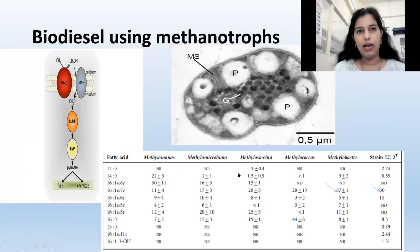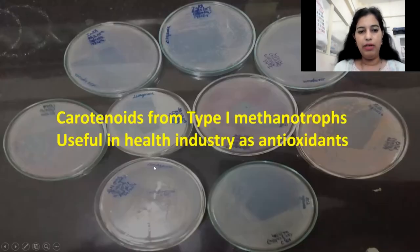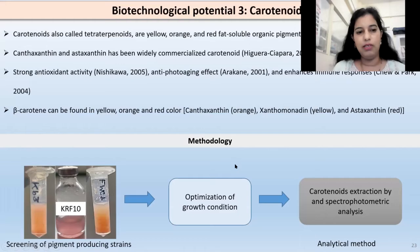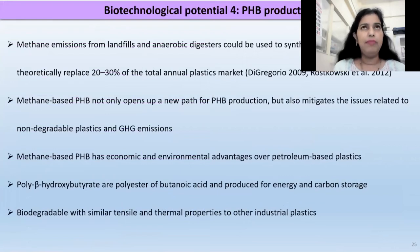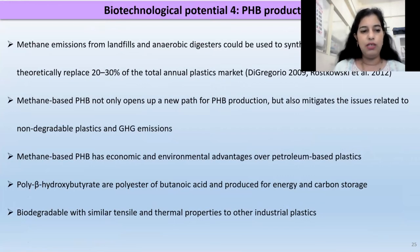Biodiesel from methanotrophs is another important application I am exploring. Methanotrophs also have beautiful orange or pink colors from which carotenoids can be extracted, and I am working on this at present. Type 1 methanotrophs are particularly useful for carotenoid production. Additionally, bioplastics in the form of PHB granules can also be extracted from methane by using methanotrophs.